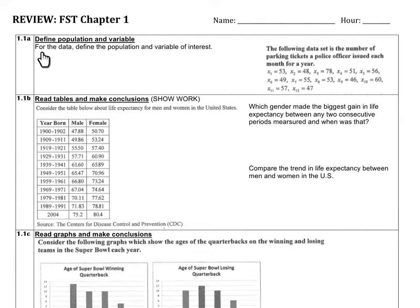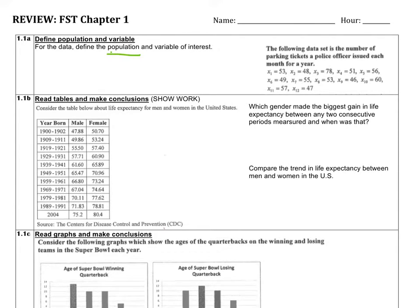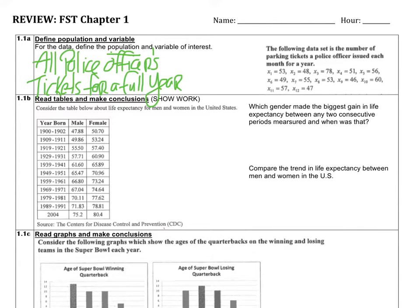For question 1.1a, we have to define a population and variable. For the data given, the scenario is: the following data set is the number of parking tickets a police officer issued each month for a year. The population would be the police officer's tickets for one full year, and the variable of interest is the number of parking tickets.